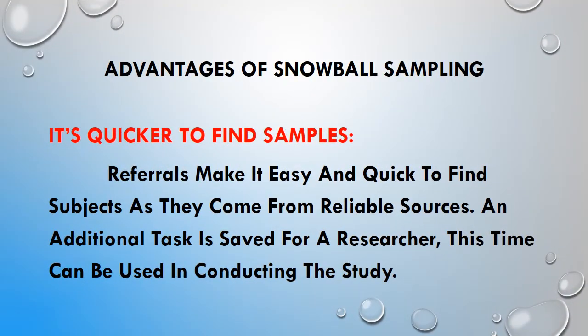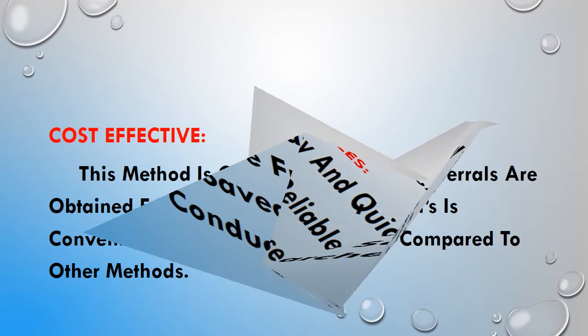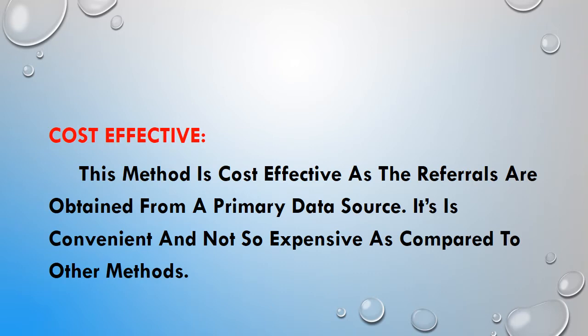Coming to the advantages of snowball sampling. It is quicker to find samples, as referrals make it easy and quick to find subjects since they come from reliable sources. Additional time is saved for the researcher, which can be used in conducting the study. The process is simple, cheap, and cost effective, and the chain referral process permits the researcher to reach the target subjects conveniently.